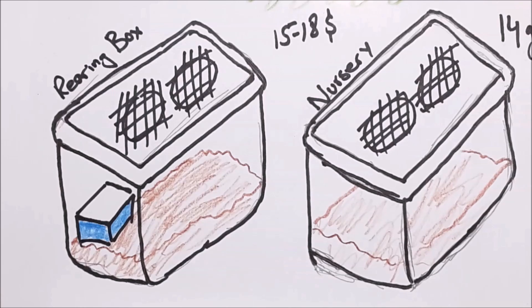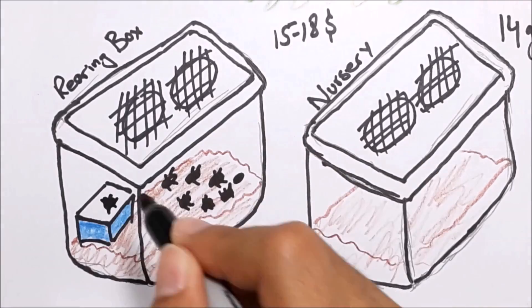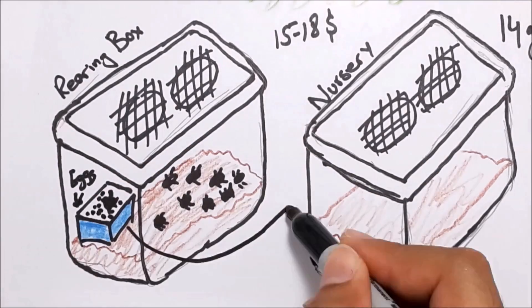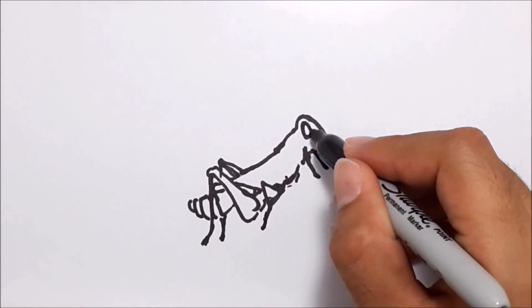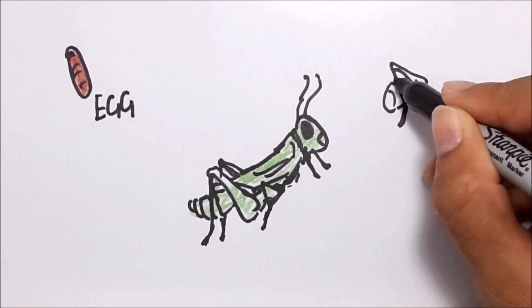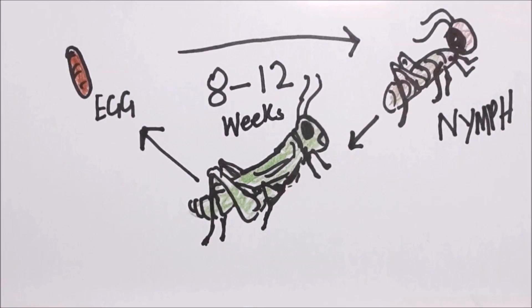Running the farm is easy as well. Introduce around 50 adult crickets to the rearing box and wait till the females lay the eggs. Then shift the egg-laying box to the nursery so that the baby crickets can grow without any bullying. Crickets generally complete their life cycle in 8-12 weeks and are harvested when they're 6 weeks old.